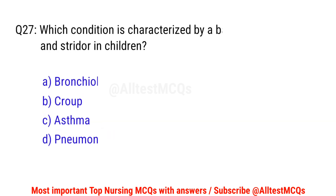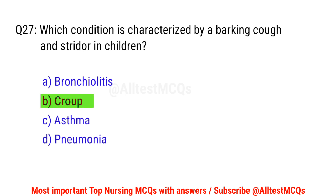Question number 27. Which condition is characterized by a barking cough and stridor in children? The correct option is B: Croup.